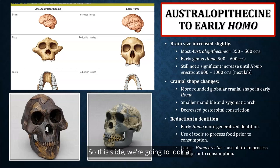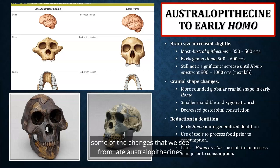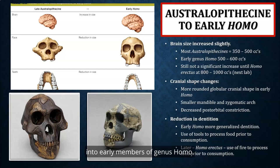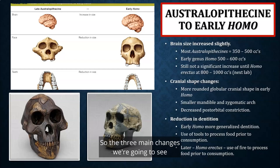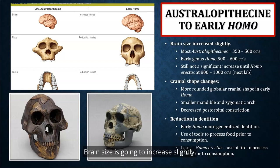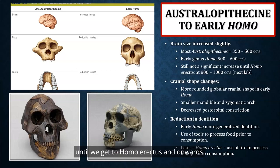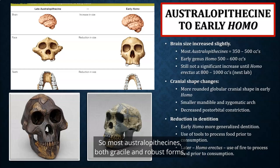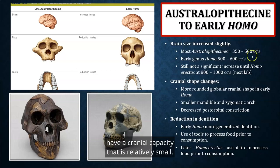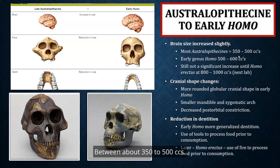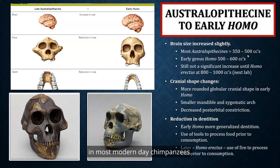This slide we're going to look at some of the changes that we see from late Australopithecines into early members of genus Homo. The three main changes we're going to see: cranial capacity and brain size is going to increase slightly. Most Australopithecines, both gracile and robust forms, as well as the pre-Australopithecines, have a cranial capacity between about 350 to 500 cc — within the range of what you'd see in most modern-day chimpanzees.